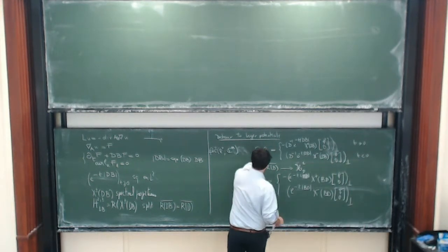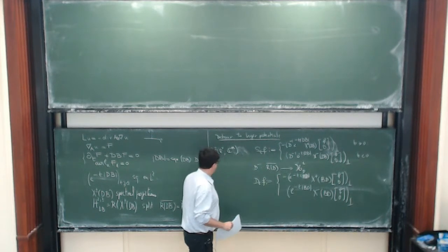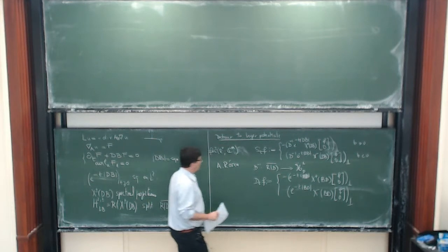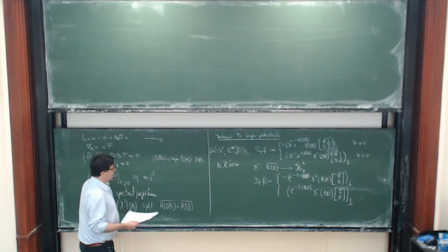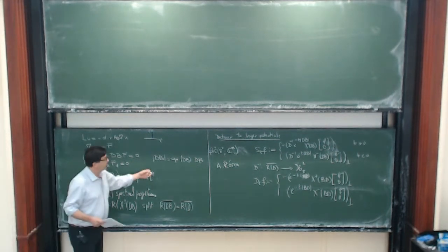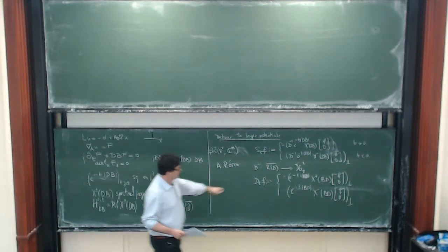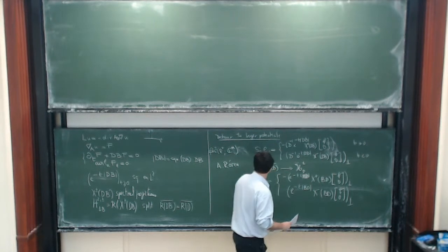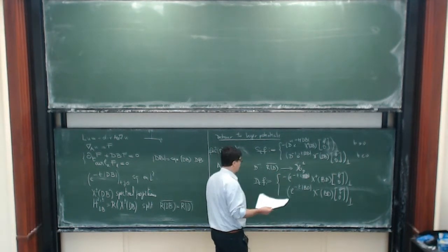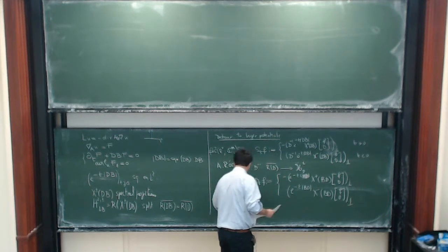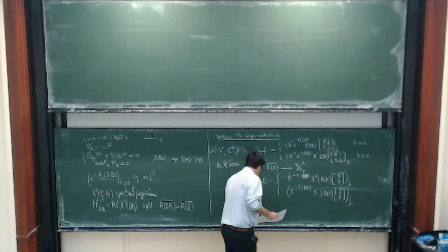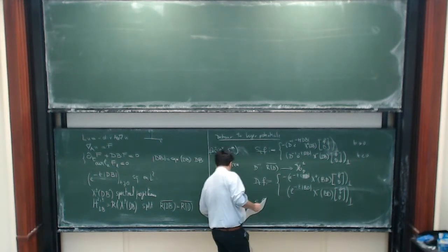So these are definitions, and they were in fact introduced by Andreas Rosen. Given that we have the functional calculus of DB and also of BD, we have clearly, for example from this formula, that D_T is bounded on L2 uniformly over T.